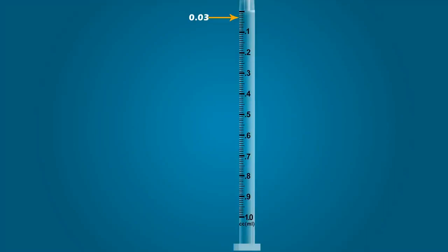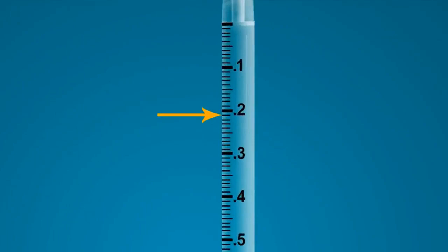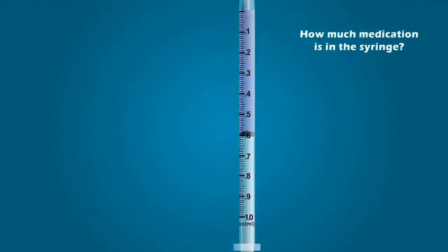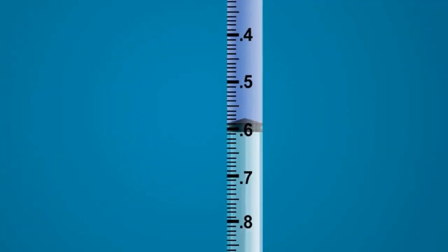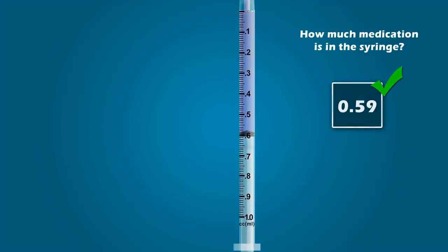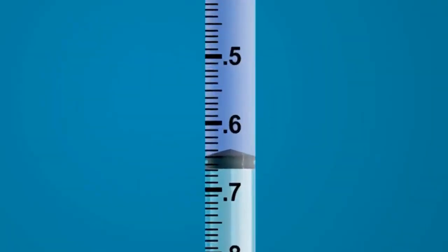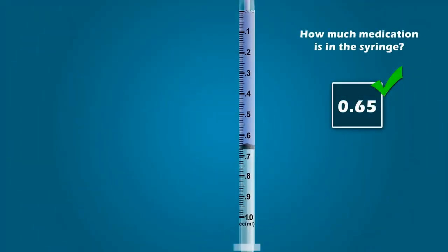Let's jump ahead so you can get a better idea of how the marks increase throughout the syringe. Here is 0.09, here is 0.1 — or you can also look at this as 0.10, because after 0.10 is 0.11, 0.12, and so on. So what is the value of this line? If you stated 0.21, you are correct. Now that you know the value of all the graduation marks, let's determine the amount of medication in the syringe. How much medication is in this syringe? If you stated 0.59 milliliters, you are correct. If you stated 0.65 milliliters, you are correct. Great job.